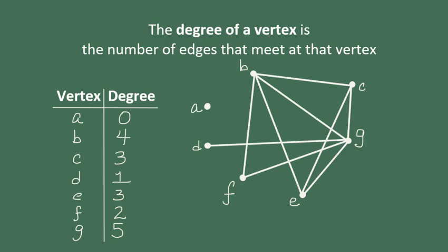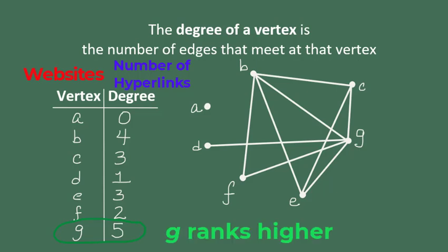In the last video, we talked about how the Google search engine uses the mathematics of graph theory to rank websites. In that context, we use the vertices to represent those websites and the edges represent the hyperlinks that connect them. So in a Google search, website G would have an advantage because vertex G has a degree of 5, meaning that the website represented by G has the greatest number of connections to other websites. This would increase its ranking.